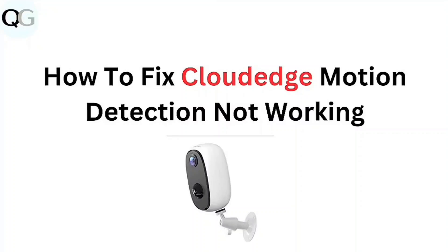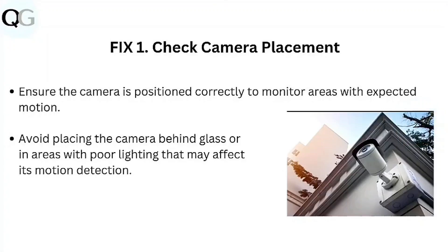In this video, we're looking at how to fix Cloud Edge motion detection not working. Step one: check camera placement. Ensure the camera is positioned correctly to monitor areas with expected motion. Avoid placing the camera behind glass or in areas with poor lighting that may affect its motion detection.